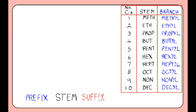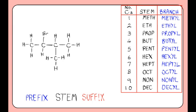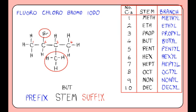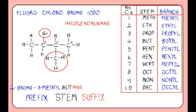Compounds containing halogens — fluorine, chlorine, bromine and iodine — are treated in a similar way to branches. They form the prefix of the name, and like carbon chain branches, you must state the position. The prefixes for halogens are fluoro, chloro, bromo and iodo. The longest carbon chain is 4, so the stem is 'but'. It has a methyl branch and a bromine atom. The bromine is in position 2 and the methyl in position 3. So in alphabetical order, bromo comes before methyl, giving a prefix of 2-bromo-3-methyl. This compound is a halogenoalkane, so the suffix is '-ane'. The compound is 2-bromo-3-methylbutane.